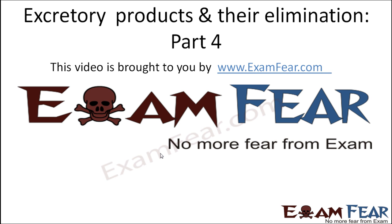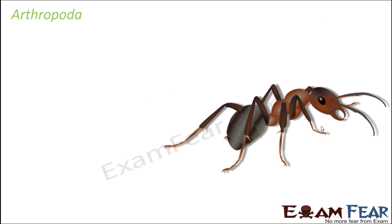Hello friends, this video on excretory products and their elimination part 4 is brought to you by examfew.com. Now let us talk about the next phylum, the arthropods or Arthropoda. This is the phylum for animals with jointed legs, and here we talk about all types of insects — whether a mosquito, a butterfly, or a cockroach — all of them fall under this phylum.